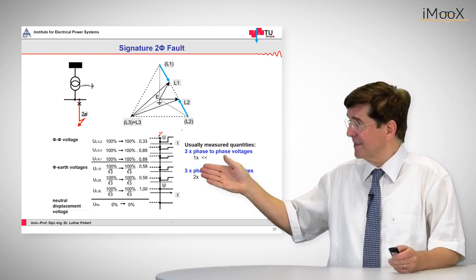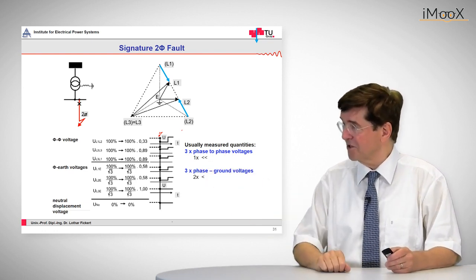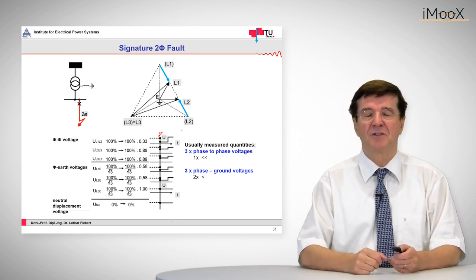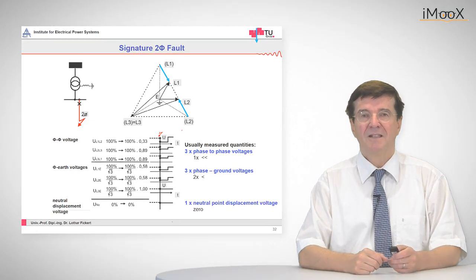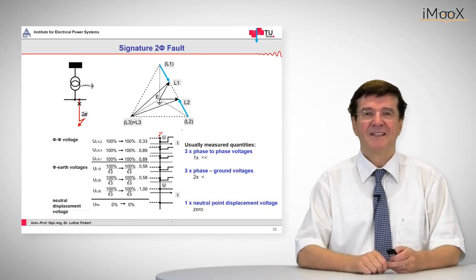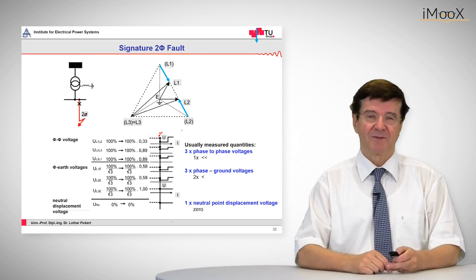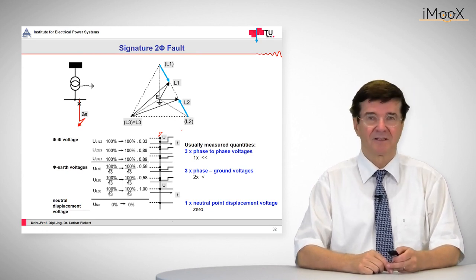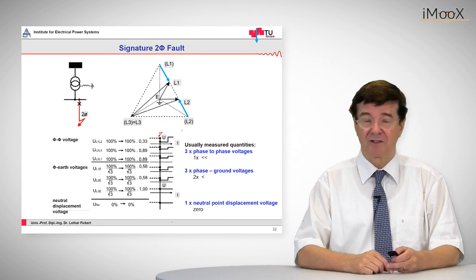The next set of traces are the phase-to-ground voltages. Here we can see that two of these phase-to-ground voltages are afflicted and this is important in this kind of failure. There is no neutral displacement voltage because, as can be shown, zero sequence current and zero sequence voltages are not involved.